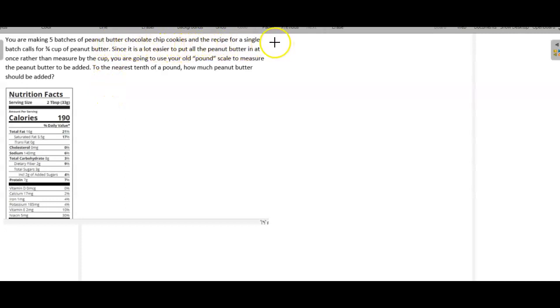The recipe for a single batch calls for three quarters cup of peanut butter. Since it is a lot easier to put all the peanut butter in at once rather than measure by the cup, you're going to use your old pound scale to measure the peanut butter to be added. So to the nearest tenth of a pound, how much peanut butter should be added?